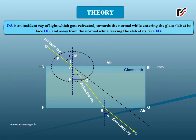OA is an incident ray of light which gets refracted towards the normal while entering the glass slab at its face DE, and away from the normal while leaving the slab at its face FG.